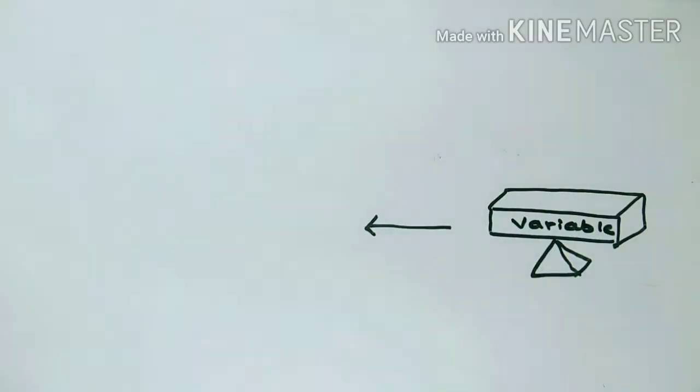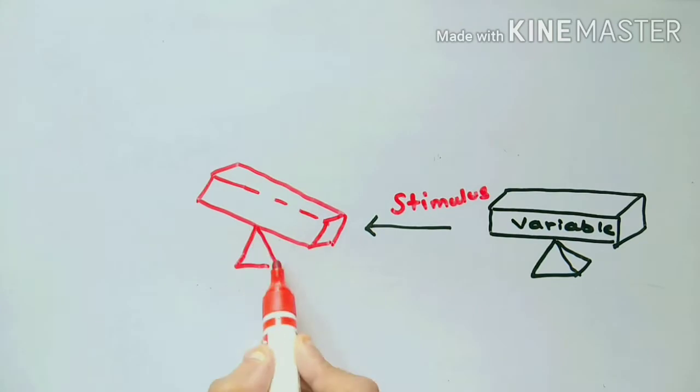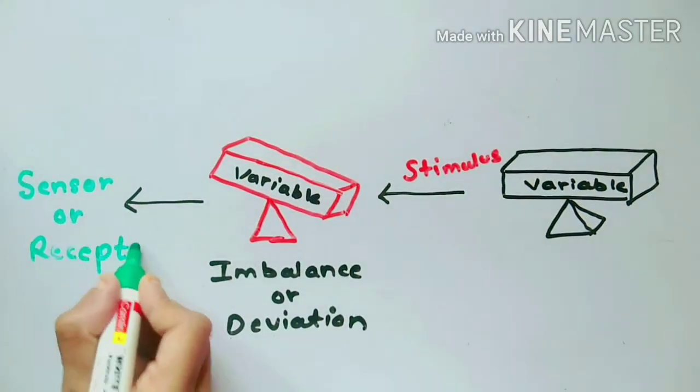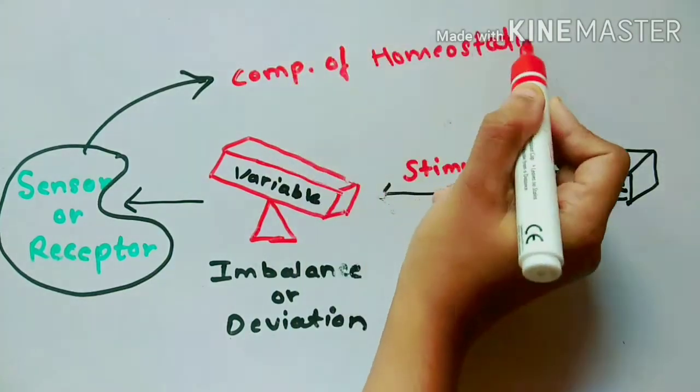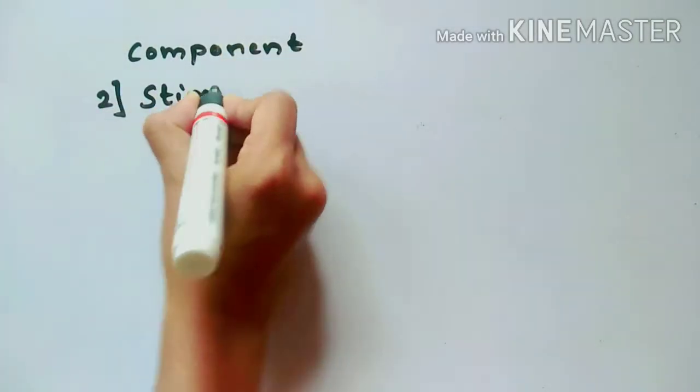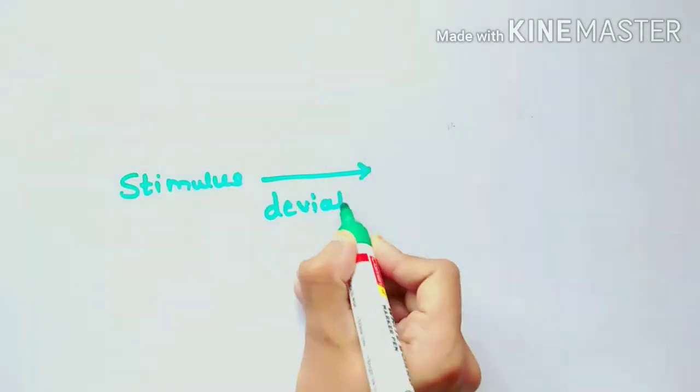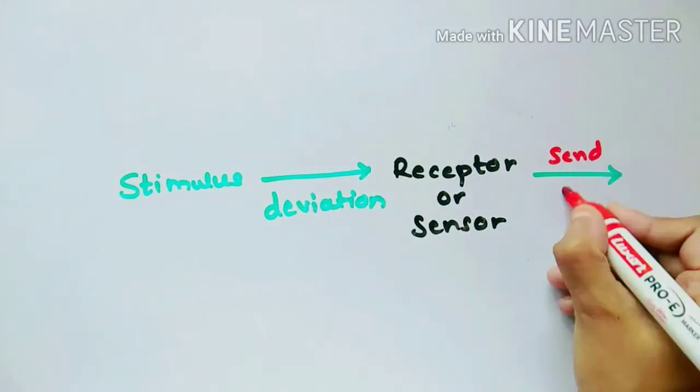Now we have deviation and now we need something that senses this change. Here we have the second component, that is sensor or receptors. Sensors and receptors sense the change in the body's system and inform the control unit.